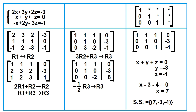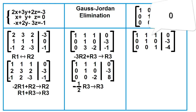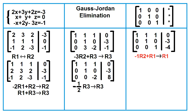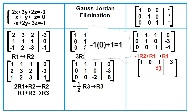Gauss-Jordan elimination is just a continuation of Gaussian elimination. The objective is to create an upper and lower triangular matrix with 1s along the main diagonal. To make row 1, column 2 equal to 0, multiply row 2 by negative 1, add row 1, then replace row 1 with the sum. Negative 1 times 0 plus 1 equals 1; negative 1 times 0 plus 1 equals 1; negative 1 times 0 plus 1 equals 1; negative 1 times negative 3 plus 0 equals 3.